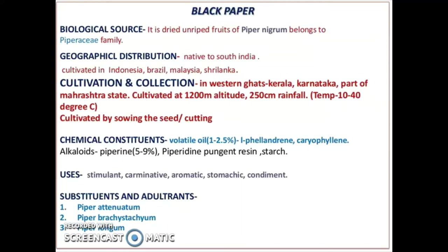Cultivation and collection: in Western Ghats of Kerala, Karnataka, and parts of Maharashtra state. Cultivated at 1200 m altitude, 250 cm rainfall, temperature 10 to 40 degrees Celsius, cultivated by sowing the seeds and by cutting. Chemical constituents: volatile oil 1 to 2.5% — α-phellandrene, caryophyllene — alkaloids, and piperine 5 to 9%, piperidine, pungent resin, and starch.